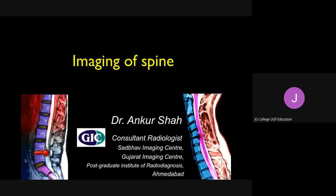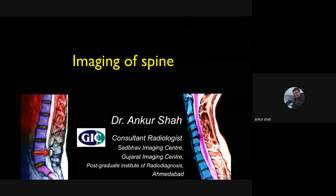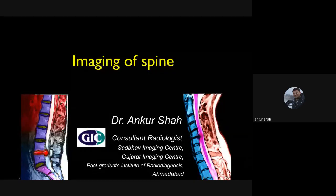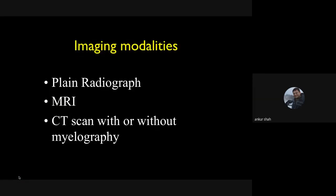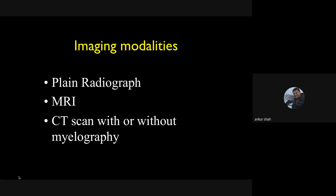You are supposed to see not just the reports but also the films, so if you know certain basic things about what to see in spine imaging, whether it is an X-ray or an MRI, that will definitely be beneficial for the patient as well as for your practice. Starting with the imaging modalities for spine, there are multiple modalities from plain radiograph to MRI, and sometimes CT scan with or without myelography, though CT myelography and conventional myelography are now almost obsolete.